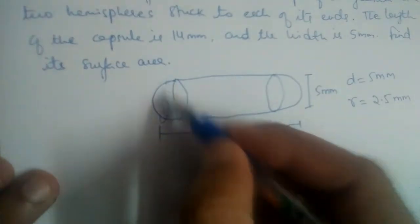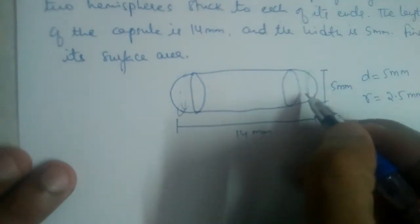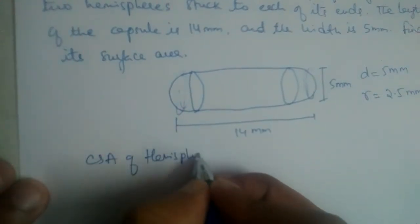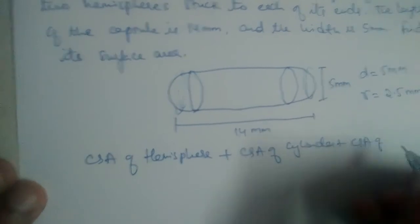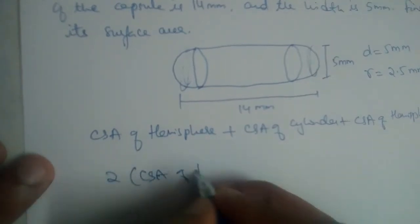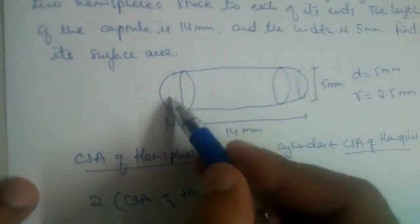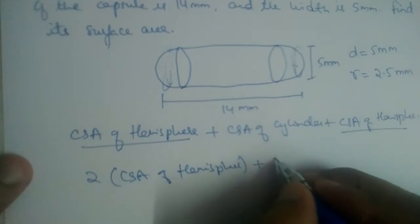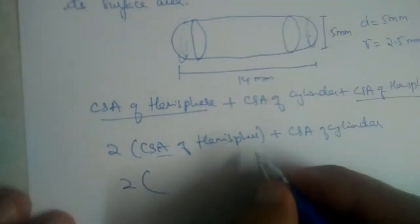To find the surface area, we need the curved surface area (CSA) of one hemisphere, plus the CSA of the cylinder, plus the CSA of the other hemisphere. Since both hemispheres are the same size, two times the CSA of a hemisphere equals the CSA of a full sphere.